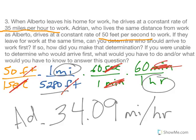Now we're in the same units. Adrian travels 34, Alberto travels 35. Who's going to get there faster? Alberto. He is going just a little bit quicker than our friend Adrian.